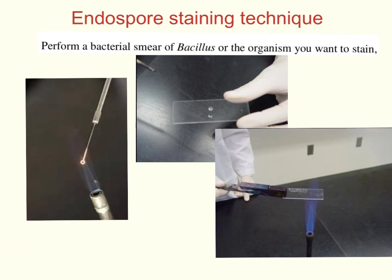The next staining technique we will review is the endospore staining technique. An endospore is a dormant, tough, non-reproductive structure produced by small numbers of bacteria — specifically Bacillus and Clostridium groups. The primary function of endospores is to ensure the survival of the bacteria when it is in an environmentally stressed condition.